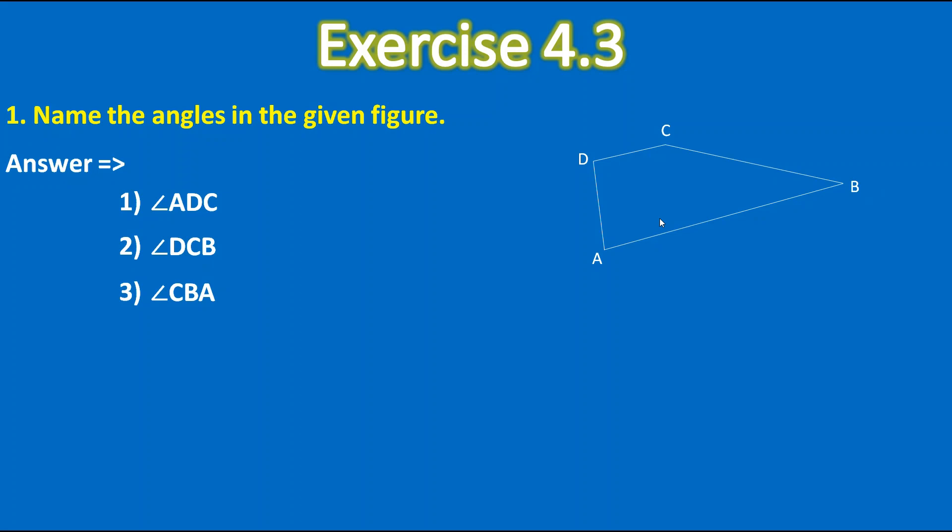CBA. As B is middle so this is the angle. Next is fourth one is angle BAD. So this one is the fourth angle. So this is the answer for this first question.